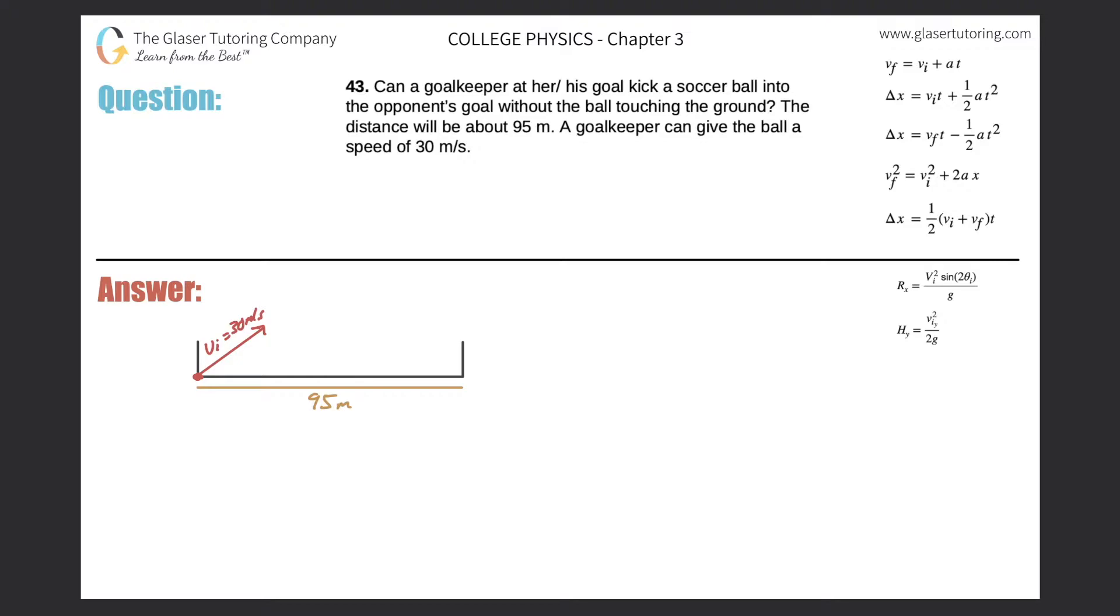Number 43: Can a goalkeeper at her or his goal kick a soccer ball into the opponent's goal without the ball touching the ground? The distance will be about 95 meters and a goalkeeper can give the ball a speed of 30 meters per second. So basically what this problem is asking us is about theoretical range.